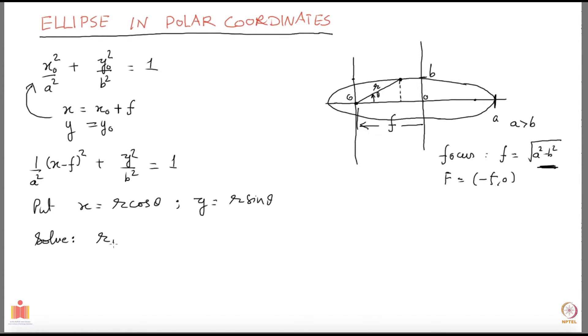You get r equal to minus b square over a plus square root of a square minus b square times cos of theta, that is one solution, and the other solution is r equals b square over a minus square root of a square minus b square multiplied by cos of theta. That is what you get.